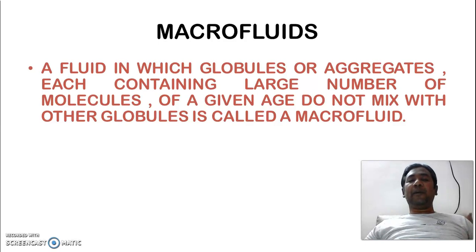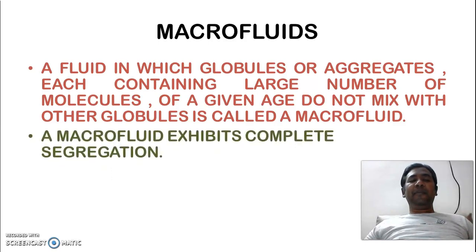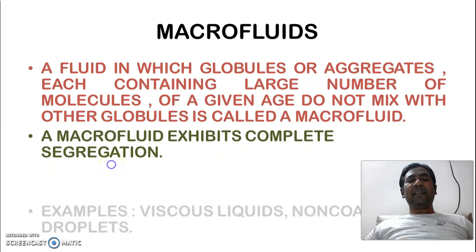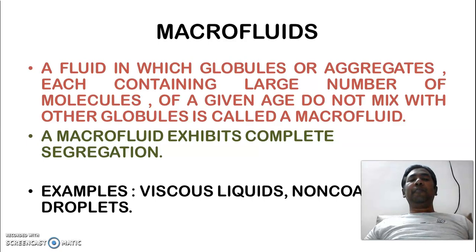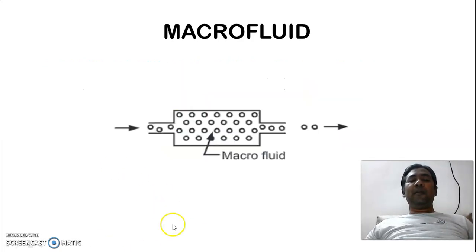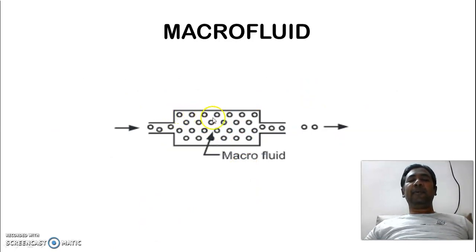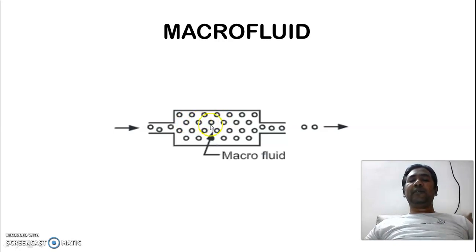A macrofluid exhibits complete segregation — the lumps are segregated and separated from each other. Any viscous liquid is a macrofluid. Non-coalescing droplets are also macrofluids. Diagrammatically, each circle represents a separate lump, and this lump has no relation with the other lump. In this way they are moving — this is a macrofluid.